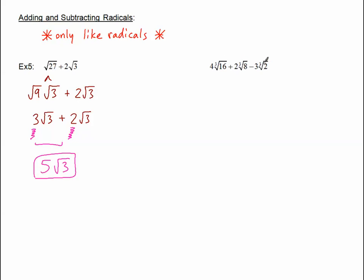So now we're dealing with all cube roots, but clearly none of the radicands are the same. So we should probably break apart and simplify these things. The cube root of 16 — the 4 is going to be out there, I'll leave that alone for a bit. The cube root of 16 is going to break up. I know 8 is a very popular perfect cube, and 8 goes into 16 two times. The cube root of 8 is a perfect cube — that's a 2, so a 2 just pops out.